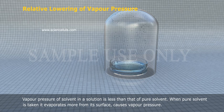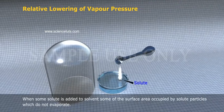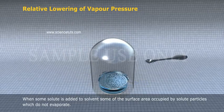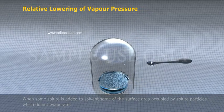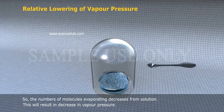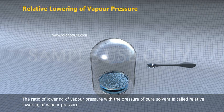When pure solvent is taken, it evaporates more from its surface, causing vapour pressure. When some solute is added to the solvent, some of the surface area is occupied by solute particles which do not evaporate. So the number of molecules evaporating decreases from the solution. This results in a decrease in vapour pressure. The ratio of the lowering of vapour pressure to the vapour pressure of the pure solvent is called relative lowering of vapour pressure.